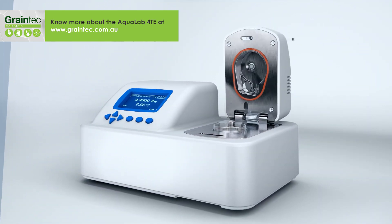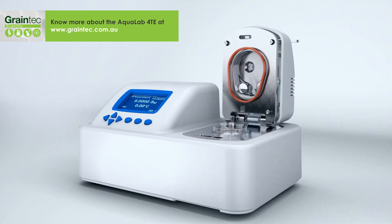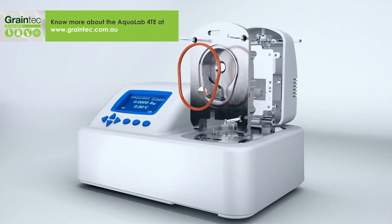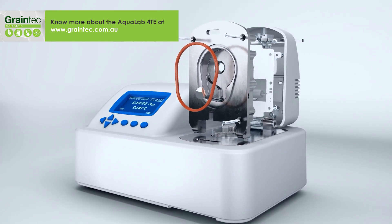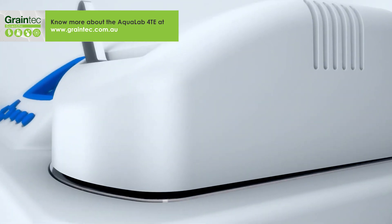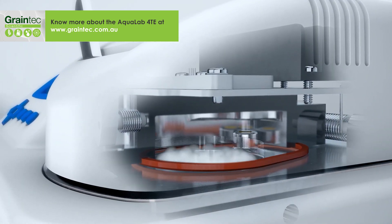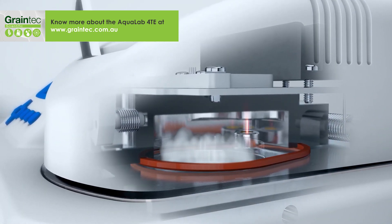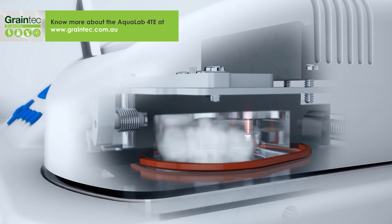The secret to its speed and accuracy is in its unique chilled mirror dew point sensor. Like all water activity meters, the Aqualab 4 TE has to wait for the sample to come to equilibrium inside a sample chamber. But the 4 TE measures water activity faster because the dew point sensor itself doesn't need to equilibrate.